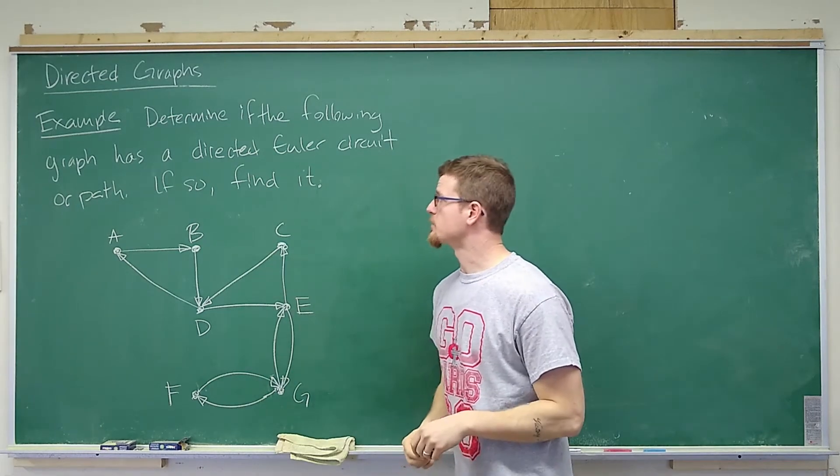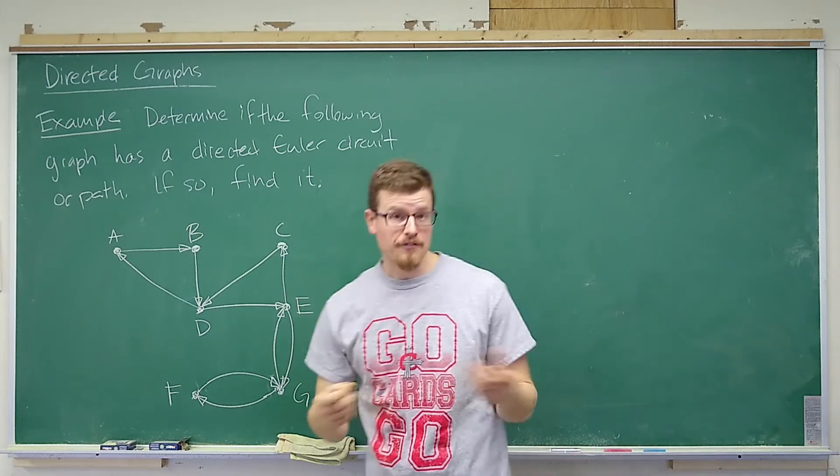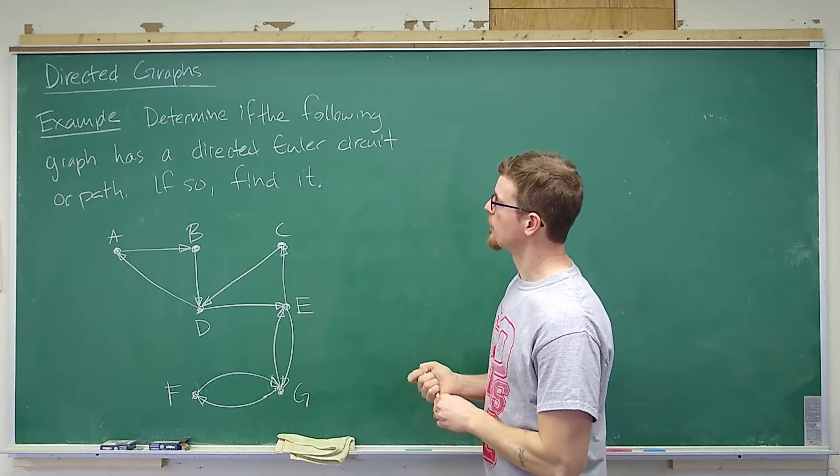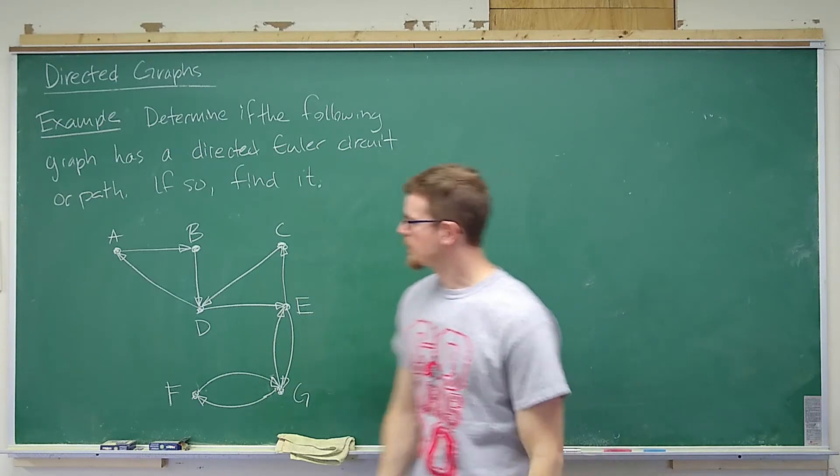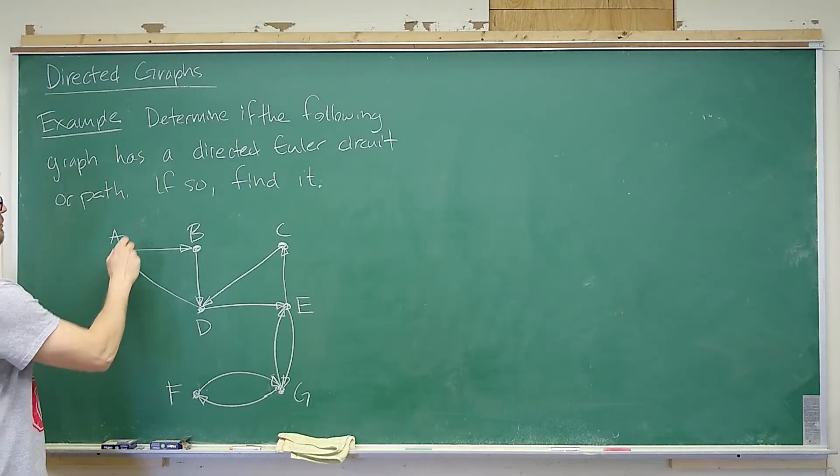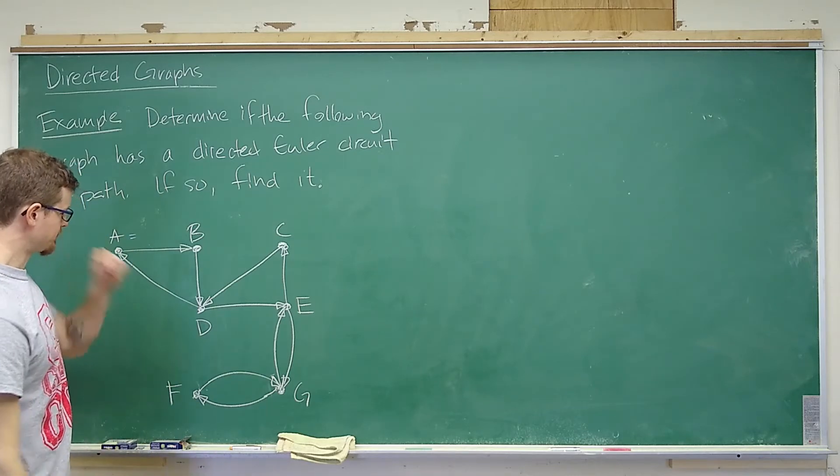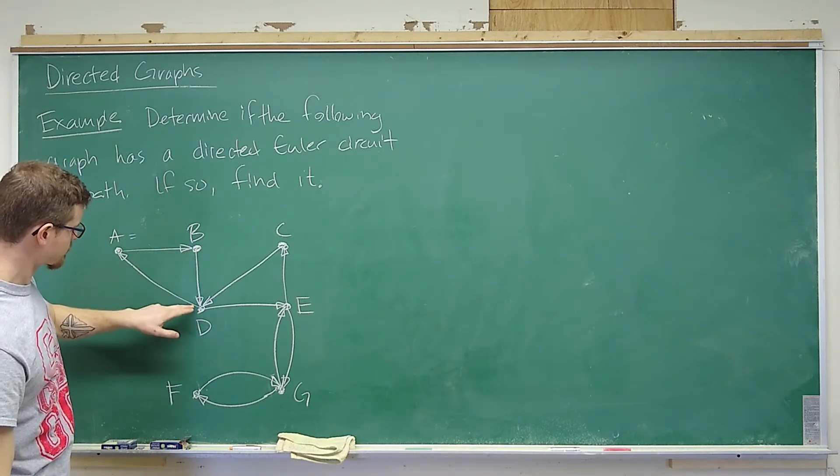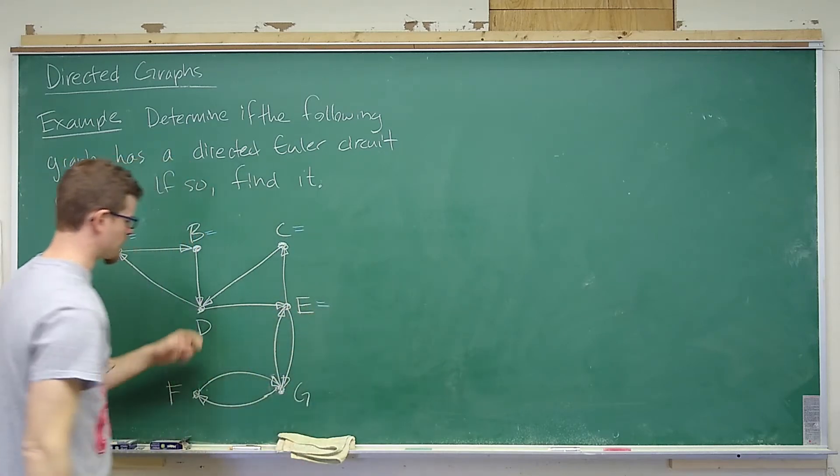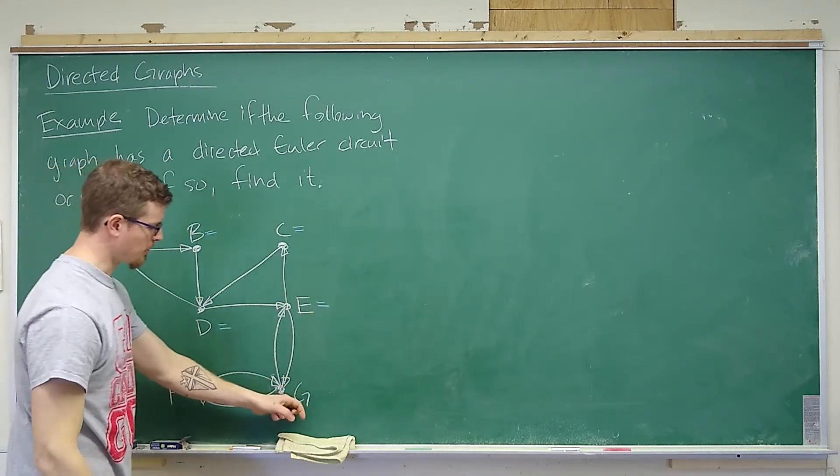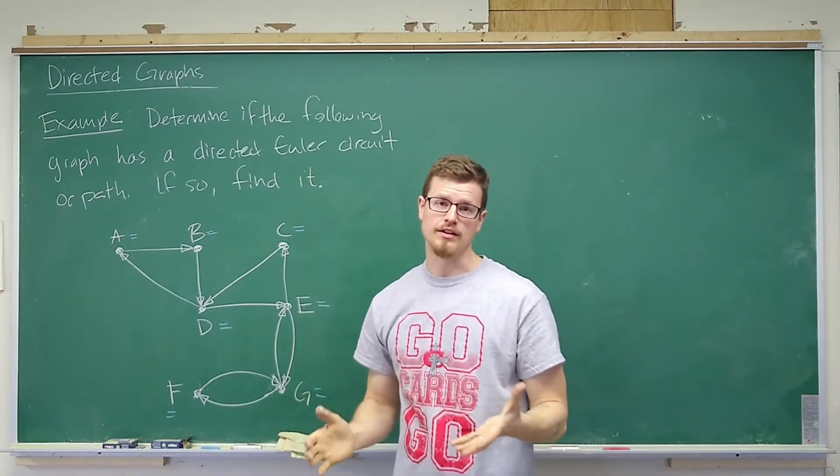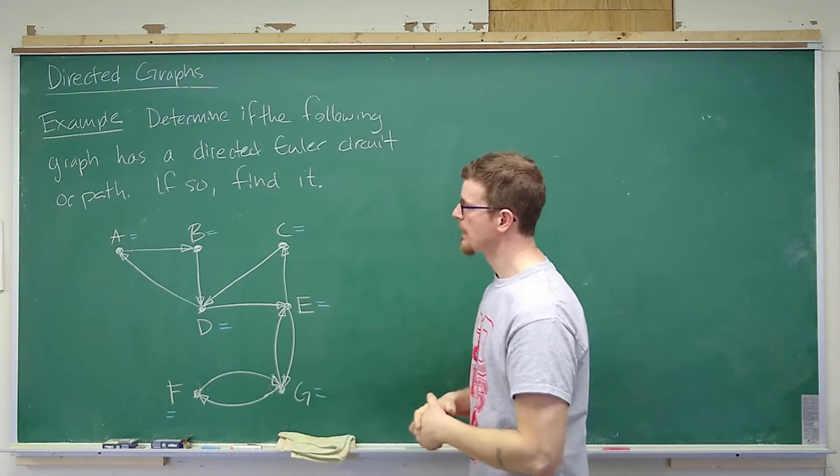In this case, we want to determine if an Euler circuit or path exists, and if it does exist, we want to try and find one. We'll use a similar algorithm that we use for regular graphs. So for A, the degree in is one, the degree out is one, so the degrees match. For B, the degree in is one, the degree out is one, so the degrees match. For C, E, D, G, and F, the degrees match. So in this case, we know that a directed Euler circuit exists. And now we just have to find one.